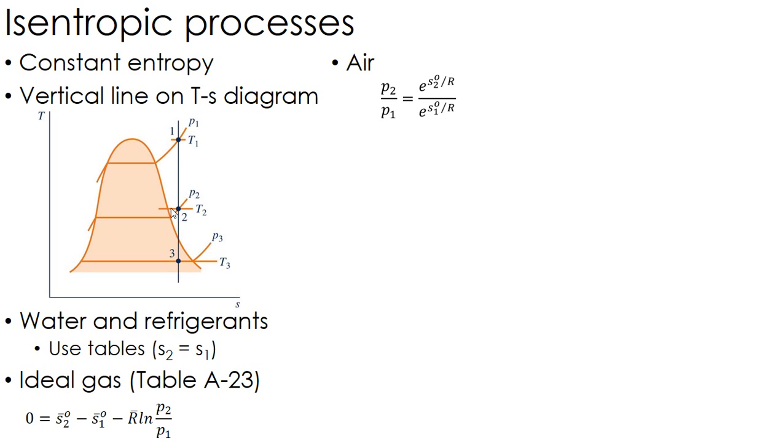Taking this equation and rearranging it for air, we're dropping R-bar to just R (dividing by the molecular weight of air, which is 28.9). Solving for the pressure ratio, we get an exponent of S-knot over R.